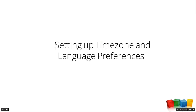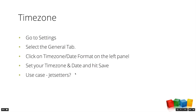Next, we'll look at time zone and language preferences. The default settings, once you add new users, will be configured to match the settings of the super administrator. So if you're in Copenhagen with Danish language set, everyone else will also be in Danish and that time zone, even if they're located in Tokyo. To change this, just go to Settings, the General tab, and select the correct time zone and date format.